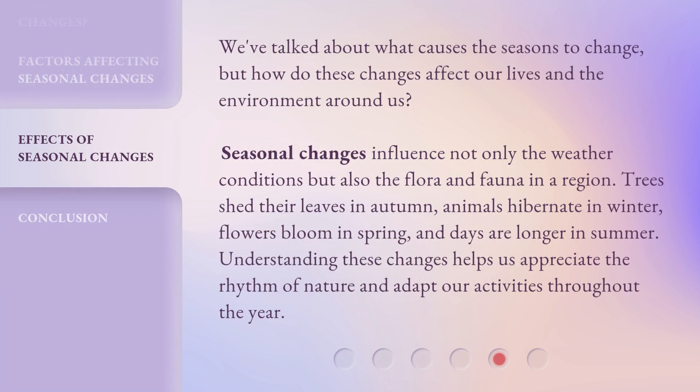We've talked about what causes the seasons to change, but how do these changes affect our lives and the environment around us? Seasonal changes influence not only the weather conditions, but also the flora and fauna in a region. Trees shed their leaves in autumn, animals hibernate in winter, flowers bloom in spring, and days are longer in summer. Understanding these changes helps us appreciate the rhythm of nature and adapt our activities throughout the year.